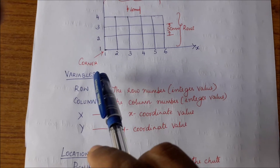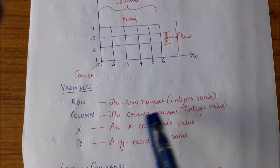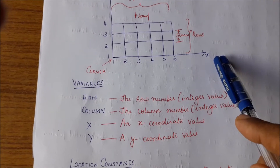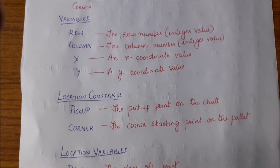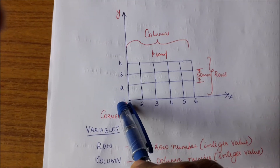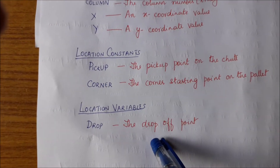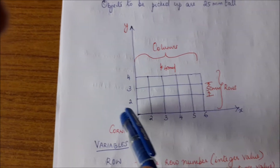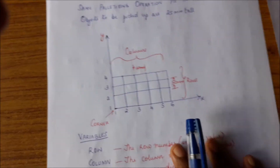To do this program, we define four variables. 'Row' indicates the row number (1 to 4), 'column' indicates the column number (1 to 6), 'x' indicates an x-coordinate value, and 'y' indicates a y-coordinate value. We also define location constants: 'pickup' is the pickup point on the chute where the part arrives, and 'corner' is the starting position — the first location where we place the first part. Finally, we define a location variable called 'drop', which indicates where we want to put the part.